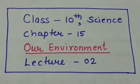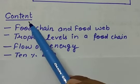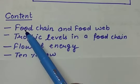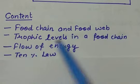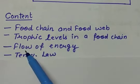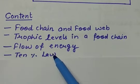Good morning dear students, welcome back. This video is for Class 10 Science Chapter 15 - Our Environment, and this is lecture number 2. In today's lecture we are going to study four topics: food chain and food web, trophic levels in the food chain, flow of energy, and the 10% law.